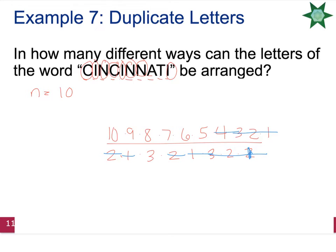And so then I can multiply 10 times 9 times 8 times 7 times 2 times 5. And if I multiply across the top, that'll give me 50,400 different ways to rearrange the word Cincinnati.